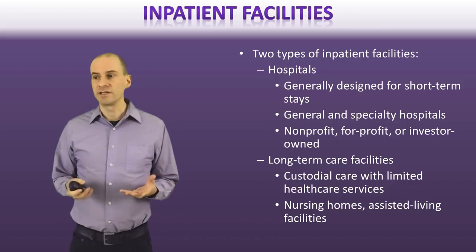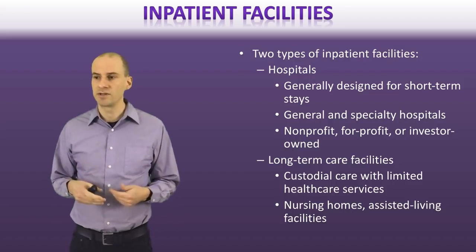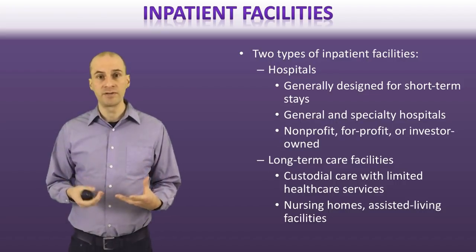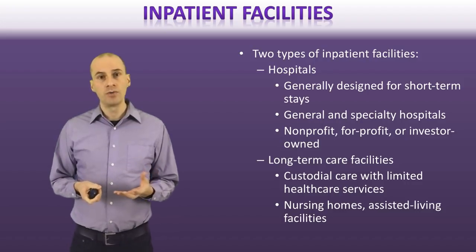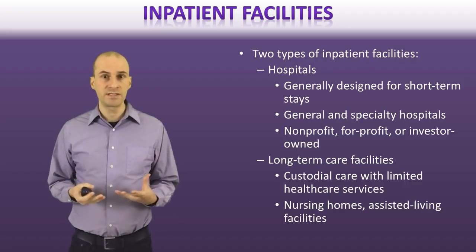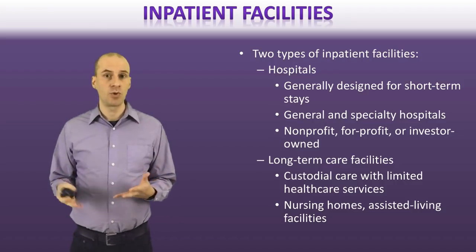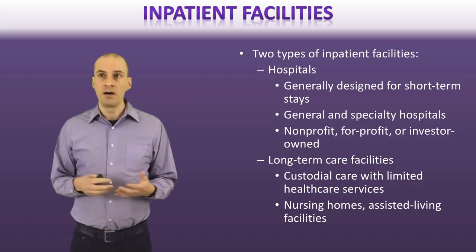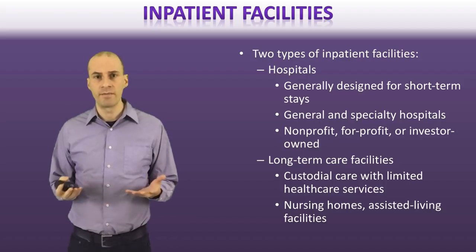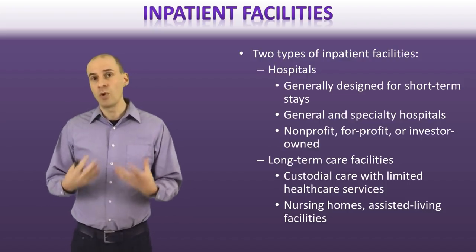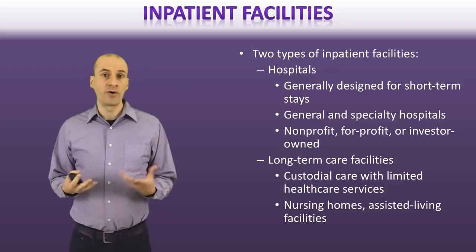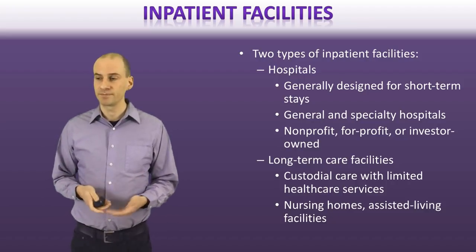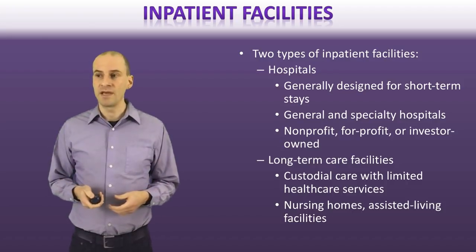We also have long-term care facilities — nursing homes and custodial care — where services are provided over long periods of time to individuals. Nursing homes are a really important part of the healthcare system; we have well over a million people in the United States living in nursing homes receiving regular care and healthcare services. There are about 16,000 of them spread out across the country. For people interested in geriatrics, there are a lot of really important services that can be offered to elderly populations.